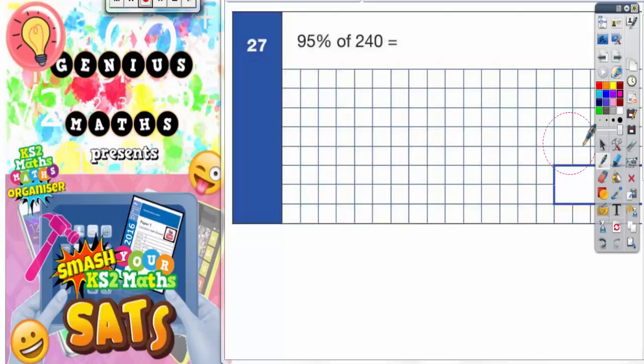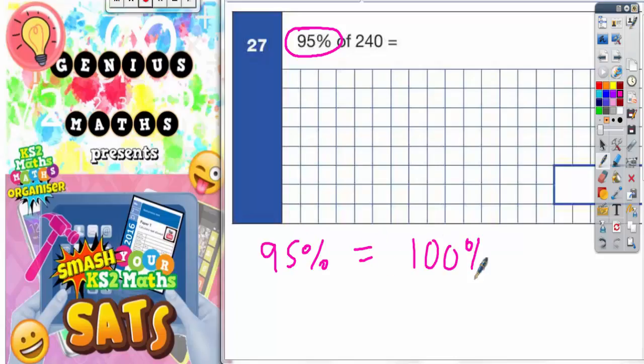Question 27: 95% of 240. This is quite a high percentage to find, and the easiest thing to do here is to think that 95% is the same as 100% take away just 5%.